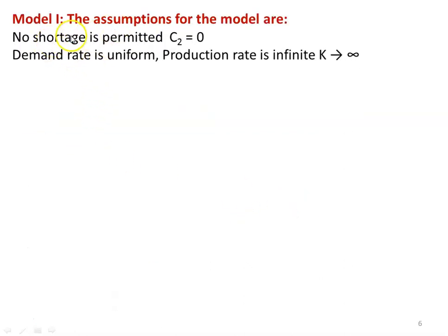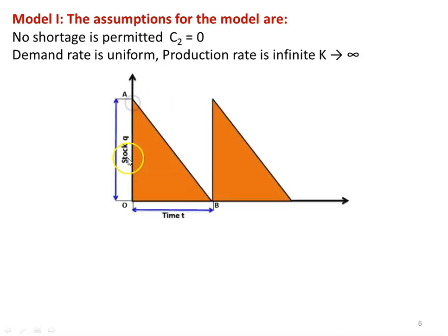Model number one — the assumptions are: there is no shortage permitted, so C2 equals 0; the demand rate is uniform, meaning every day the demand for a particular item is constant (for example, 10 items consumed every day); and the production rate is infinite, meaning K tends to infinity — if you place an order, immediately you get the stock, so there is no lead time.